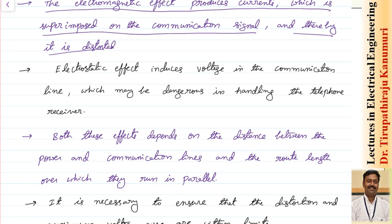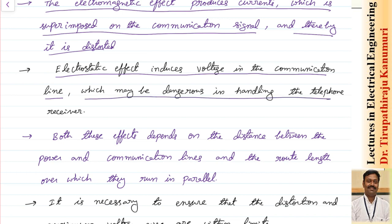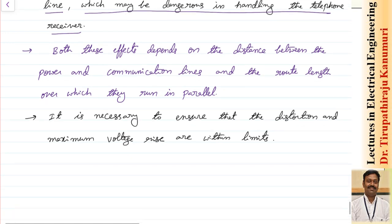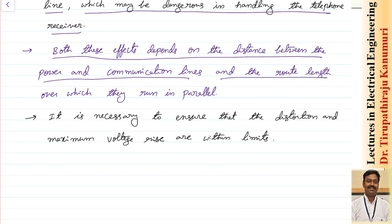The electrostatic effect, or capacitance effect, induces voltage in the communication line, causing the voltage to increase. This may be dangerous when handling the telephone receiver, because this voltage value goes on integrating as you pass along the length of the line, creating danger to the person operating the receiver if it crosses the limit.